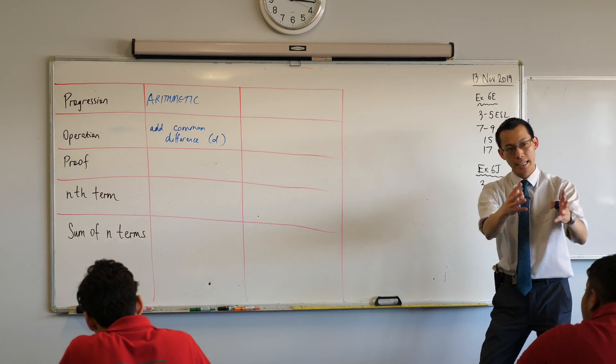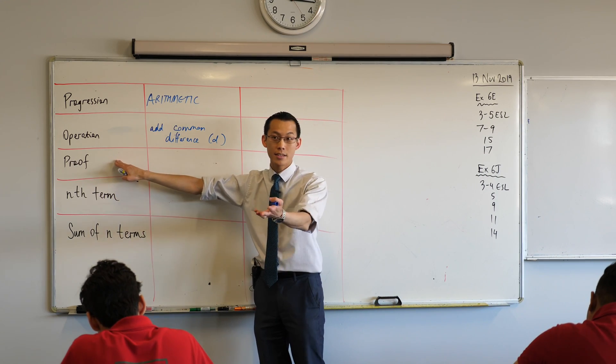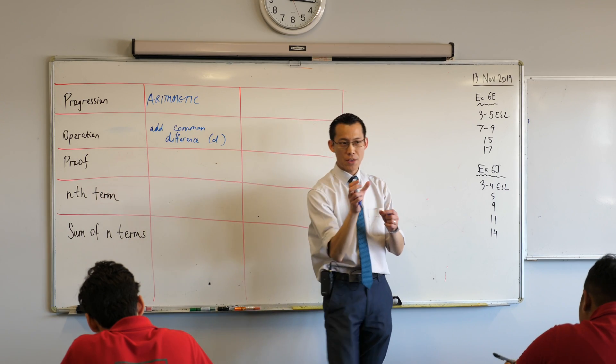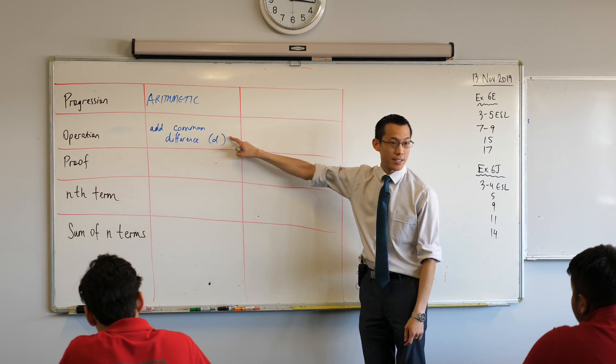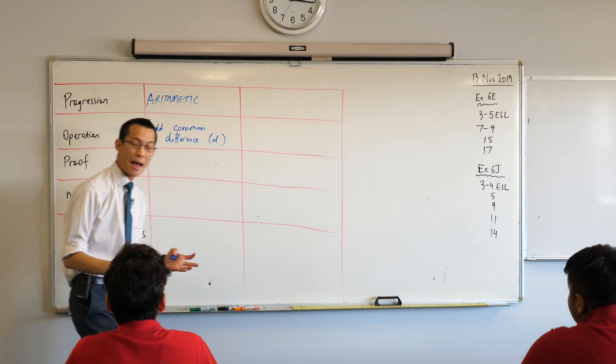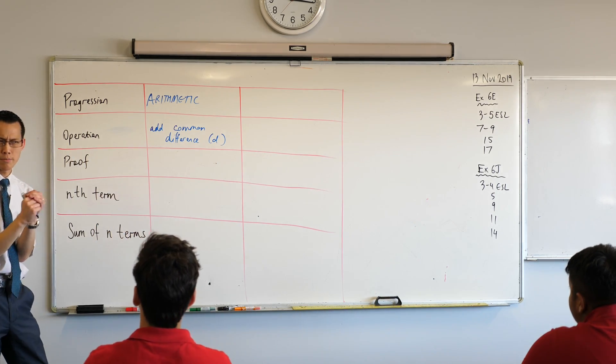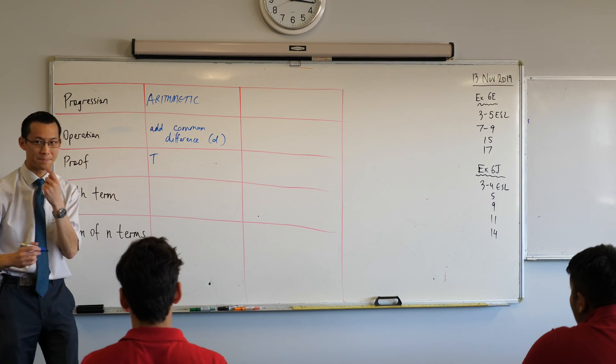Now if you get given a progression of some kind and they say, hey can you prove that that is an arithmetic progression? There's something that you can state, an equality you can state, that connects to this. So if you can show that this is true, it will definitely be an arithmetic progression. Does anyone remember? It's right back at the definition of what an AP is. I'll give you a clue. It starts with a T.